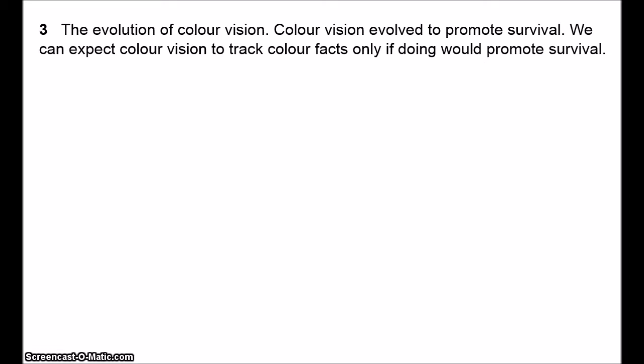The charge here is that even if there are colours in the primitivist sense, evolution cannot be sensitive to them, so our perception of colours is likely to be radically mistaken, which would essentially be an anti-realist kind of view. So basically primitivism entails anti-realism, which is obviously not what the primitivist would want, being a realist.